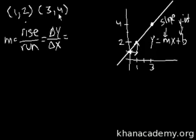Change in y: 4 minus 2. Change in x: 3 minus 1. Two over two. 4 minus 2 is equal to 2, and 3 minus 1 is equal to 2.